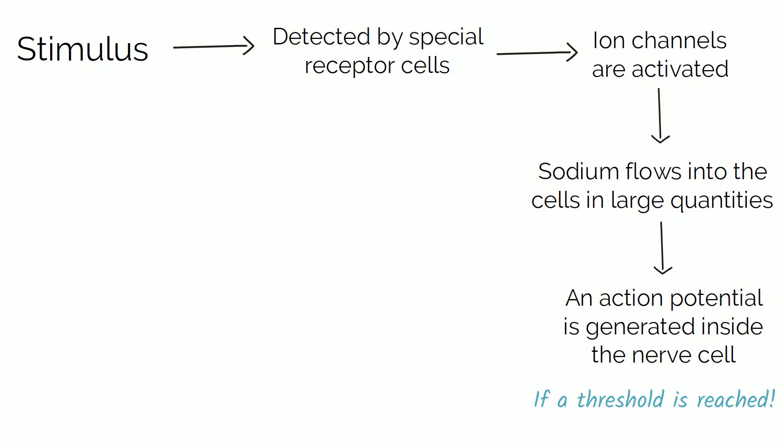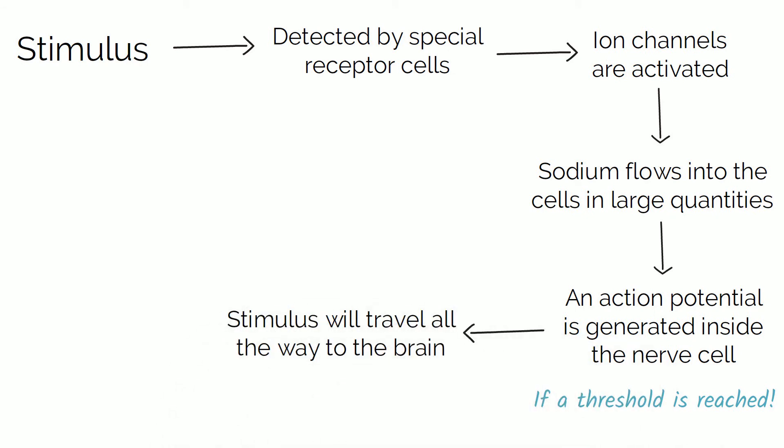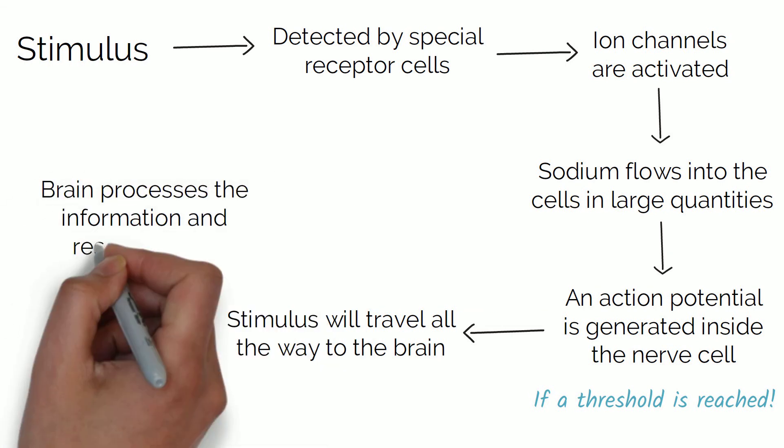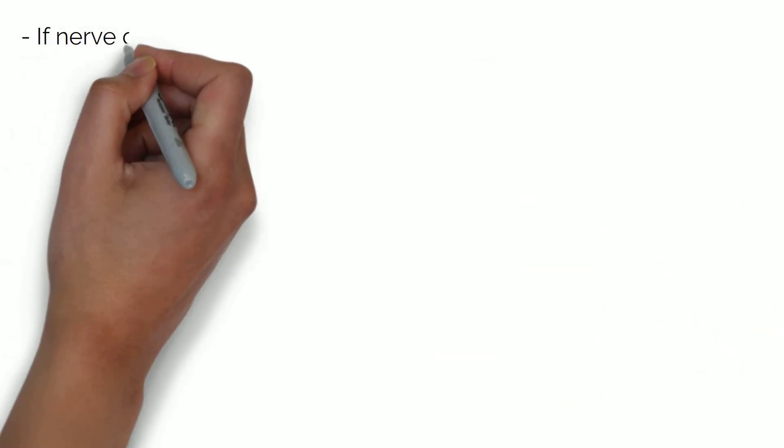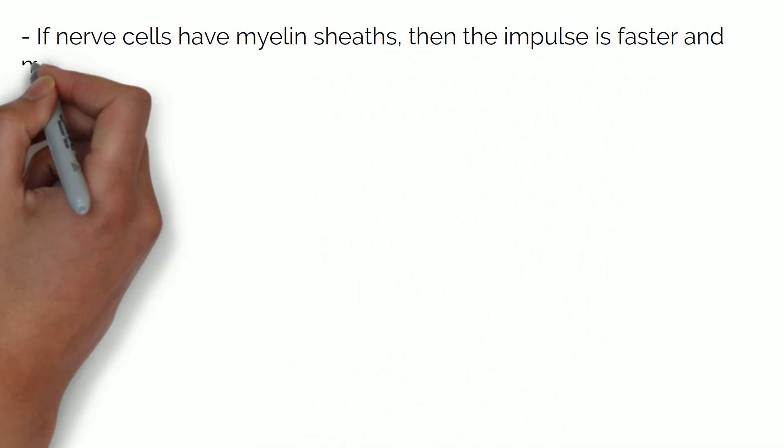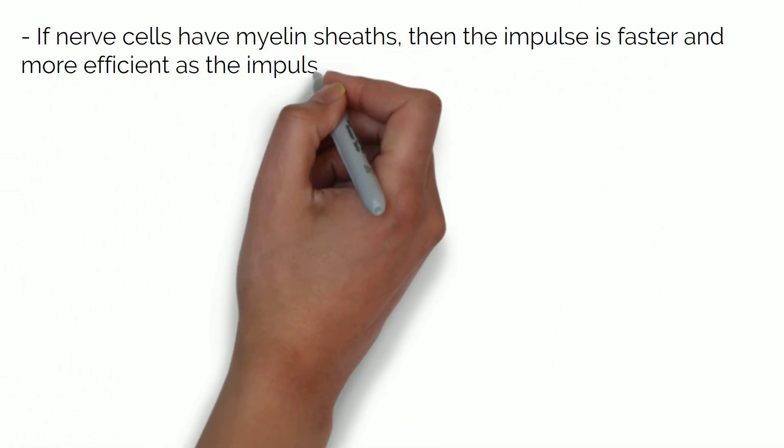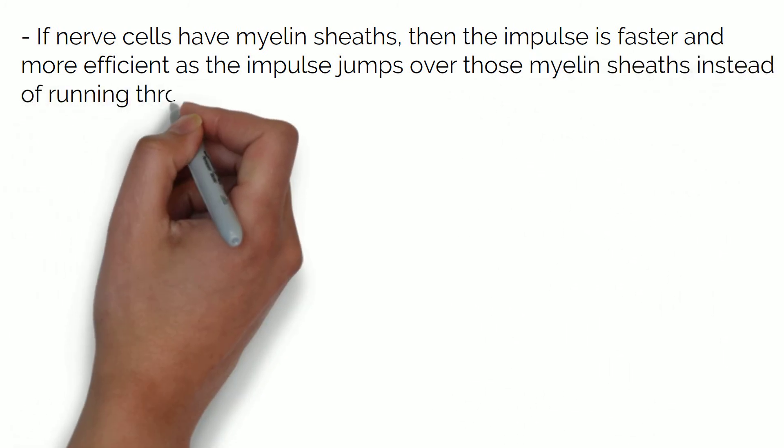But if that threshold is reached, it generates an action potential and the stimulus will travel all the way to the brain so that information can be processed. How this impulse travels through the nerve cells can differ from cell to cell. If cells have those myelin sheaths, then the impulse is faster and more efficient as it jumps over those myelin sheaths instead of running through the whole axon.